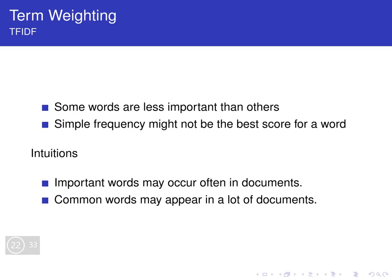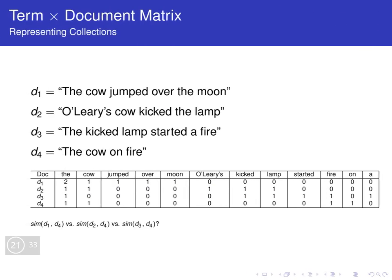So another concept that is important is the following. Let's say we have our term by document matrix representing a collection of four documents. Document one is 'the cow jumped over the moon,' document two is 'O'Leary's cow kicked a lamp,' document three is 'the kicked lamp started a fire,' and document four is 'the cow on fire.'